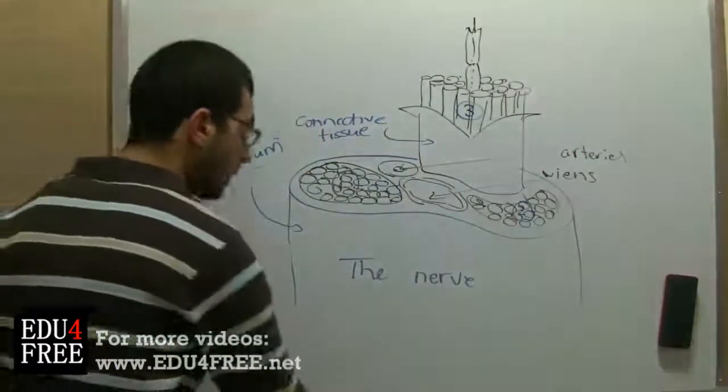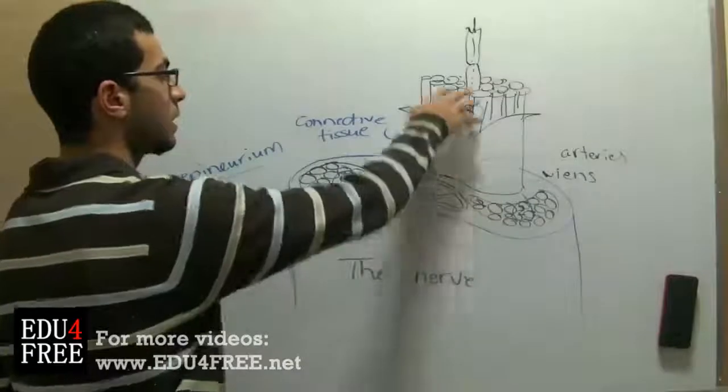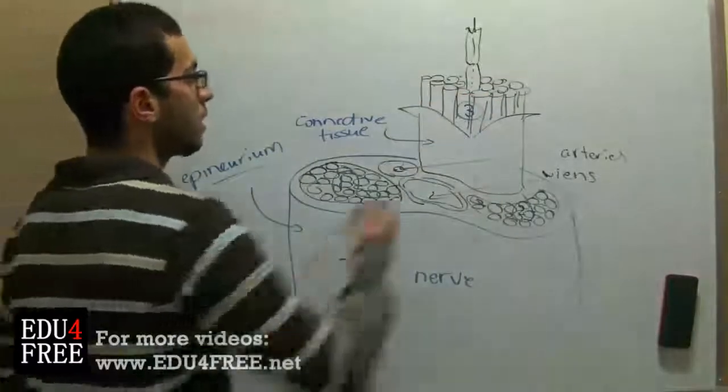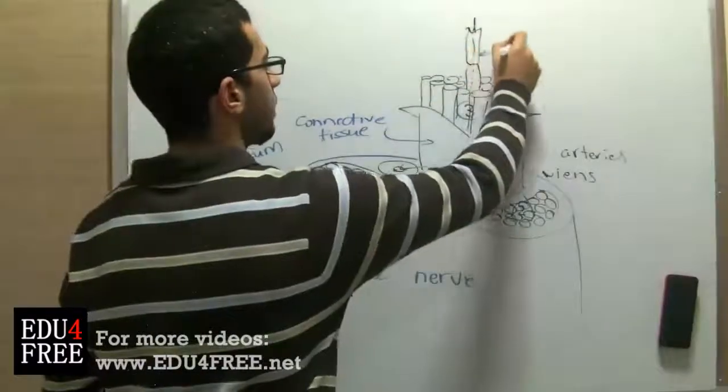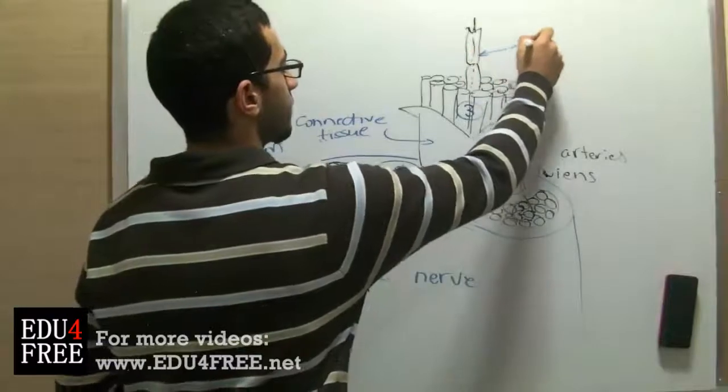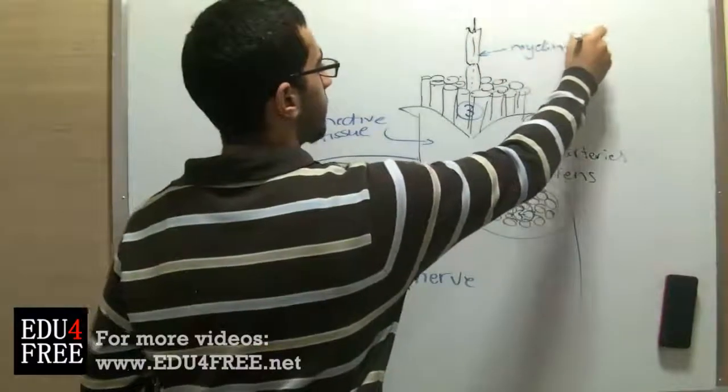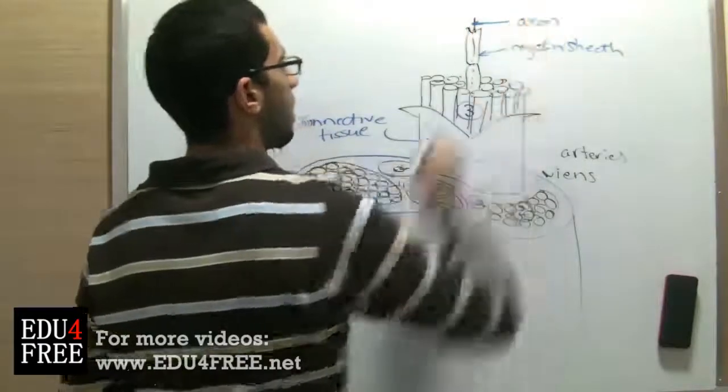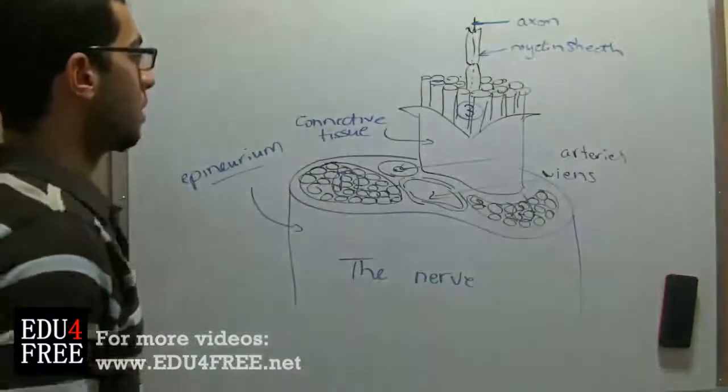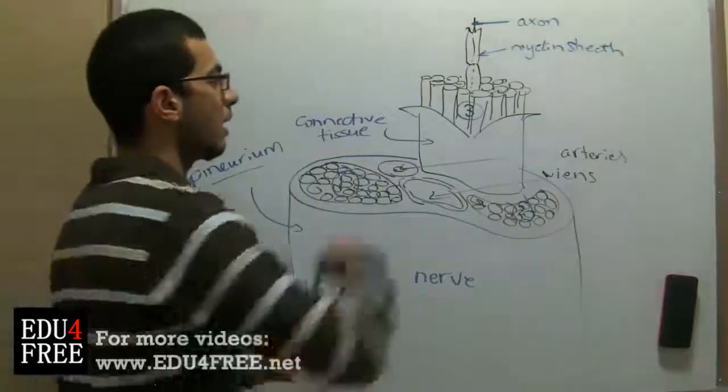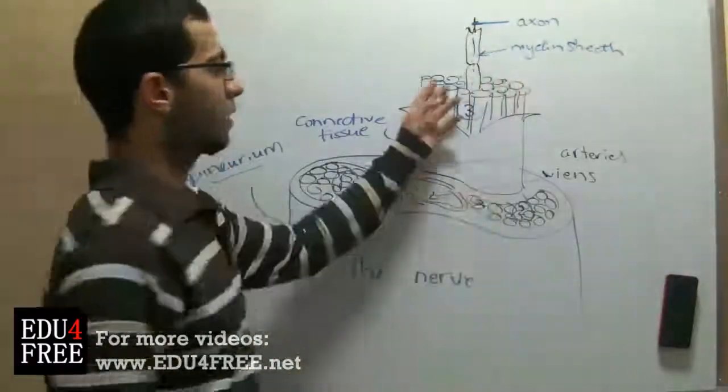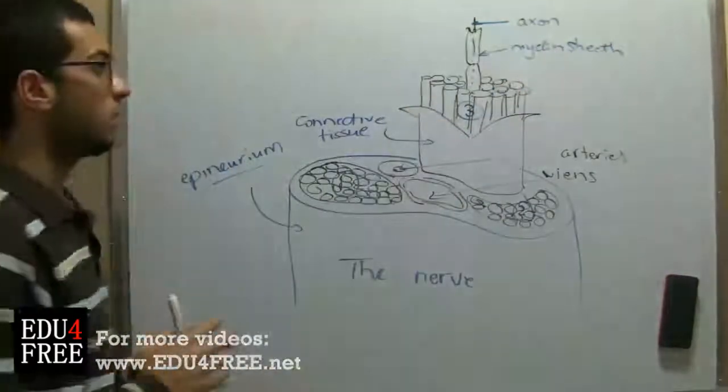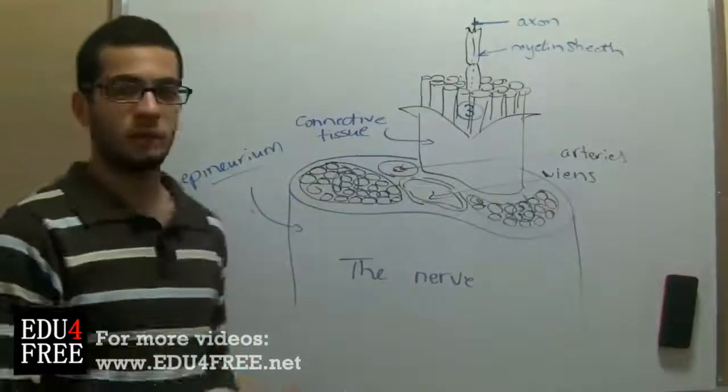So as we can see here, each nerve bundle contains a group of neurons. So this is the myelin sheath, and this is the axon. So the neurons here are connected together with neuroglia, or glial cells, as we have just mentioned.